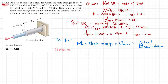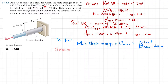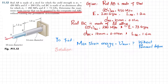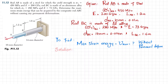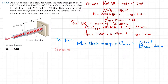Welcome back. Problem 11.12: Rod AB is made up of steel for which yield strength is 450 MPa and E is 200 GPa. Rod BC is made up of aluminum alloy for which yield strength is 280 MPa and E is 73 GPa. Determine the maximum strain energy that can be acquired by composite rod ABC without causing any permanent deformation. This is the figure — rod AB is made up of steel and rod BC is made up of aluminum.